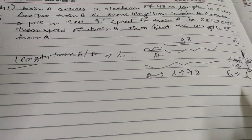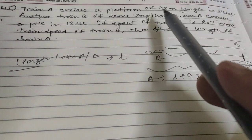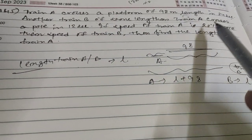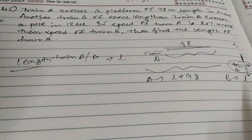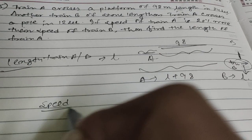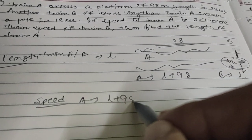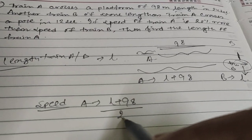Train A covered it in 24 seconds and train B is in 12 seconds. So the speed of A is (L plus 98) divided by 24, and for B this is L by 12.